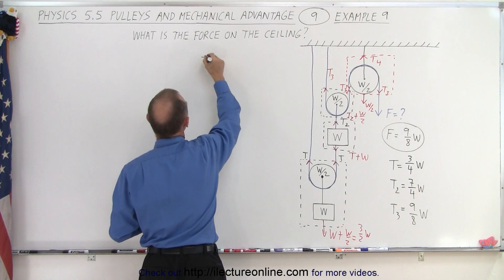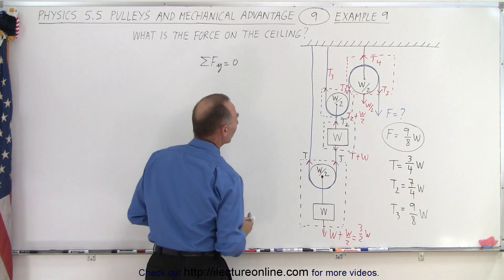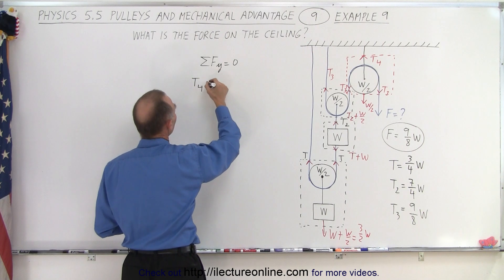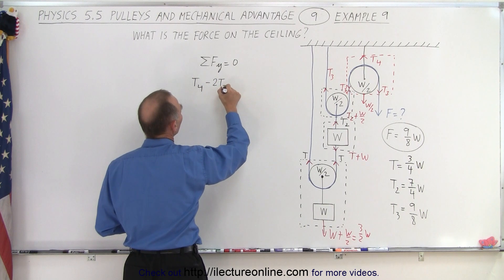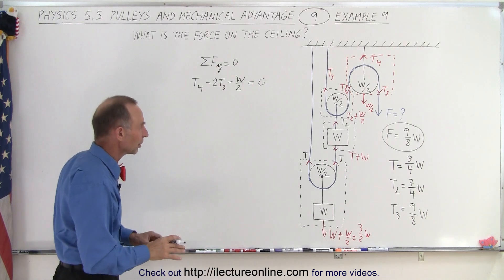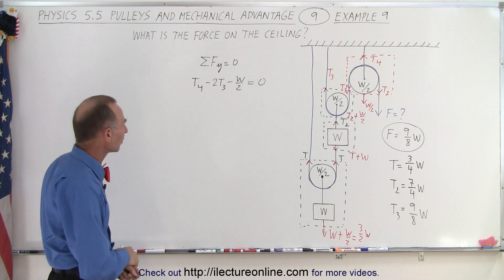Let's do it this way. The sum of all the forces in the y direction add up to zero. So pulling upward, we have T4. Pulling downward, we have two T3s, but we also have the weight of the pulley, and that adds up to zero. Remember, we're ignoring the moment of inertia of the pulleys. We just simply say that we have weight on the pulleys.